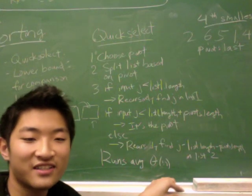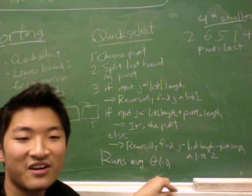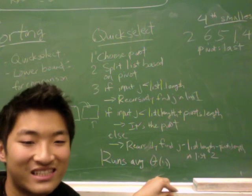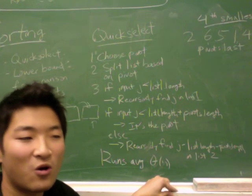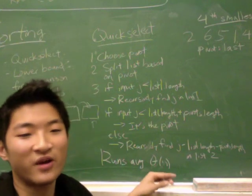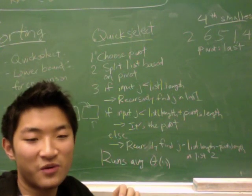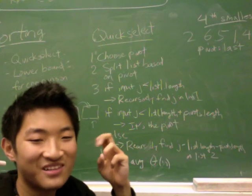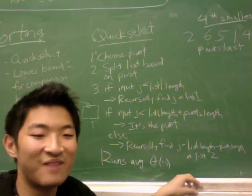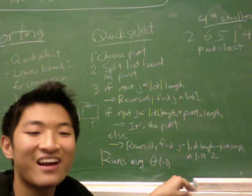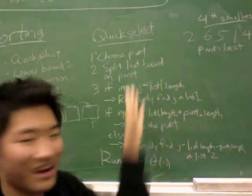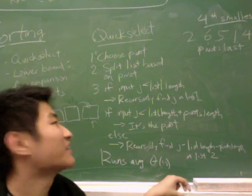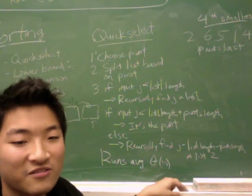So QuickSelect, you're given an input argument j which wants you to find the jth smallest element. In other words, you're given an unsorted array, you want to find the jth smallest element. That's the same thing as sorting the array and finding the element at index j, but we can do this without having to completely sort the input array that we're given.